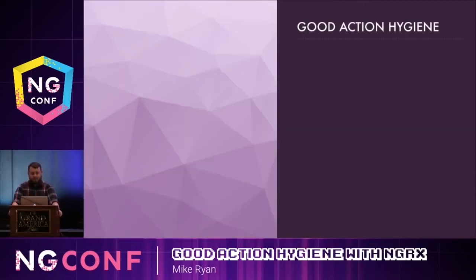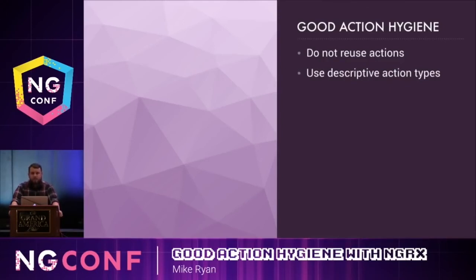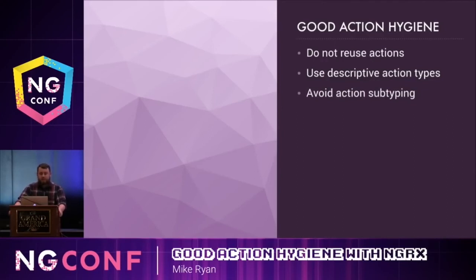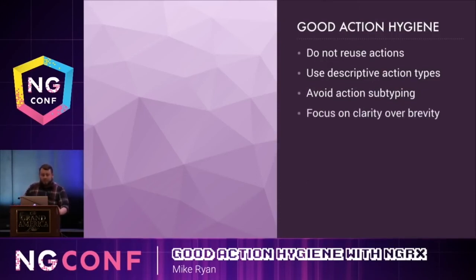What is good action hygiene? It's not reusing actions — this makes it clear what the inputs to reducers and effects really are, and makes those reducers and effects easier to read in a year's time. It's using descriptive action types — this improves debuggability and traceability in your NgRx application; you can look at your action log and know where an action is coming from. It's about avoiding action subtyping to keep unnecessary complexity out of your reducers and effects and make your tests easier to write. It's about focusing on clarity over brevity — always lean towards explicit code over code that was fast to write.